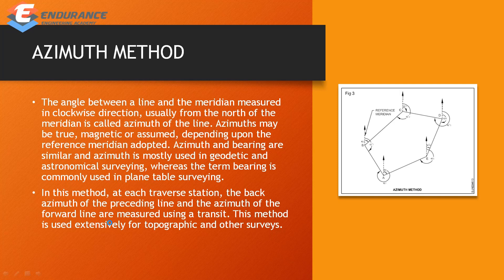The azimuth method uses the angle between a line and the meridian, measured in the clockwise direction, usually from the north of the meridian — this is called the azimuth of the line. The azimuth can be true, magnetic, or assumed azimuth, depending on the reference meridian used.